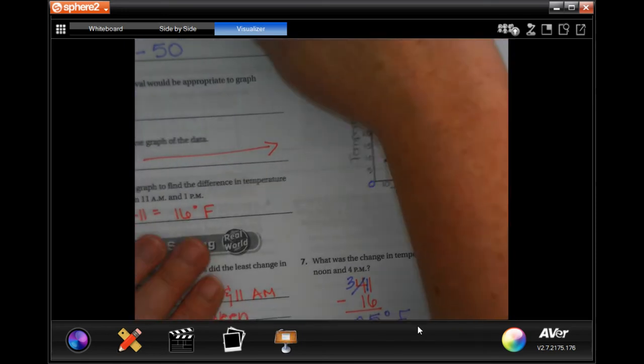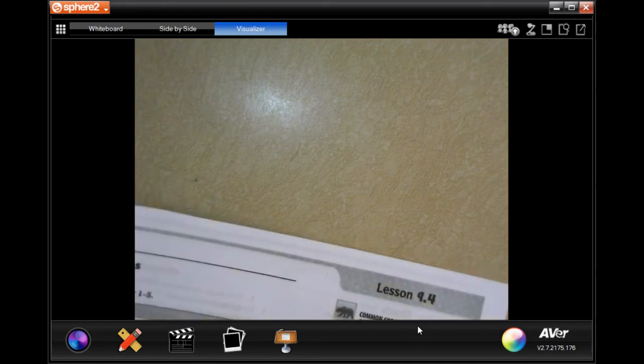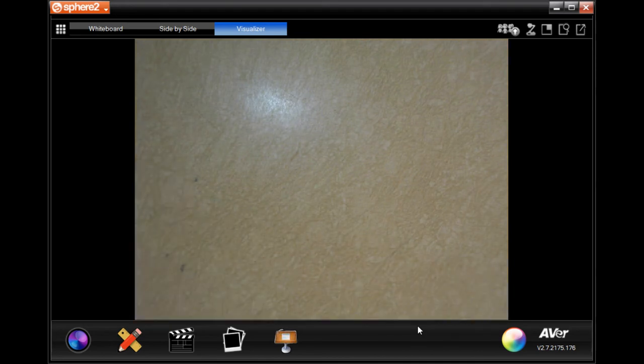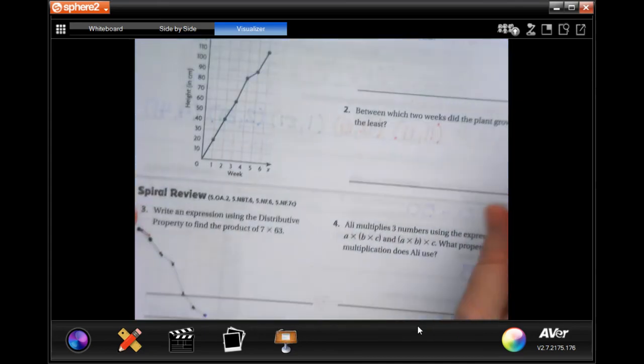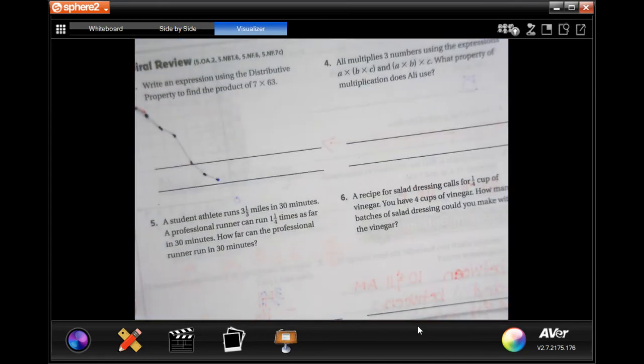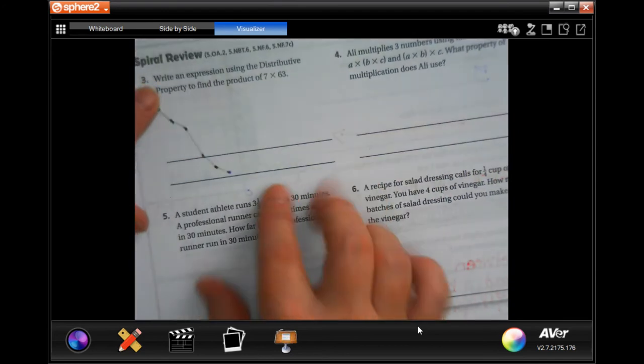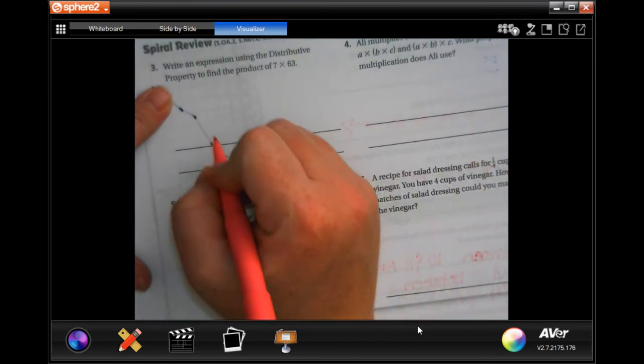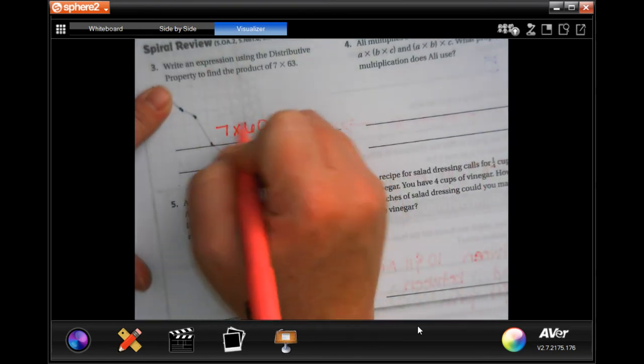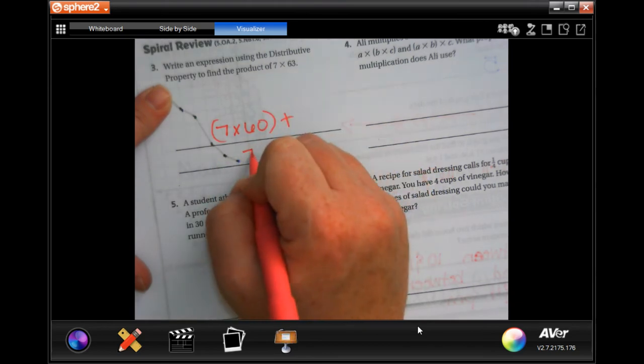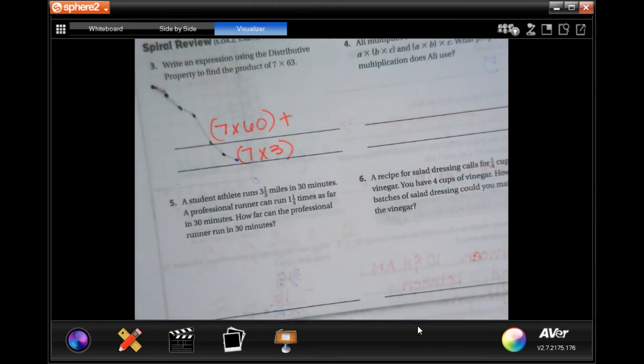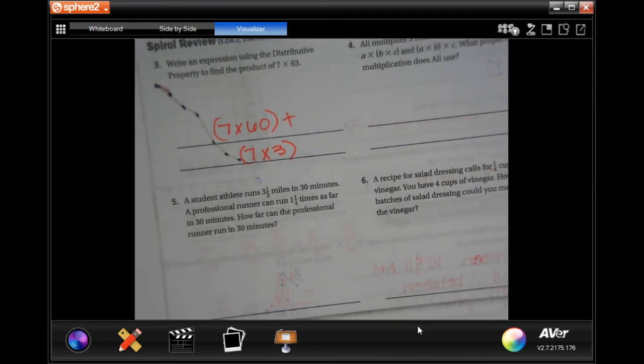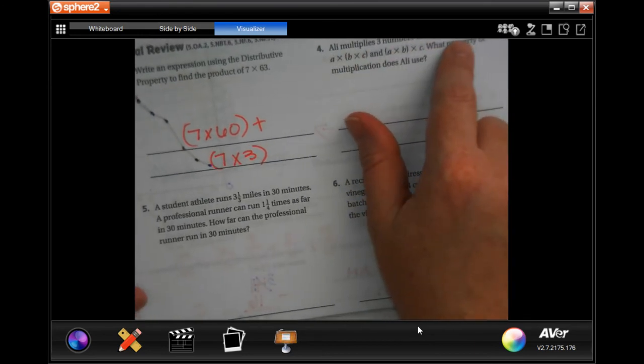Make sure that you guys are showing your work. Now I'm going to flip this over. You guys are going to do the lesson check, and we're going to do spiral review. Write an expression using the distributive property to find the product of 7 times 63. Well, so we would just write 7 times 60 plus 7 times 3. That's the distributive property, guys, super easy.